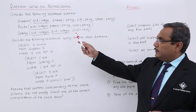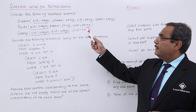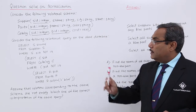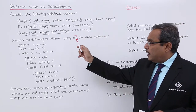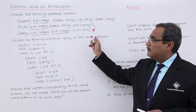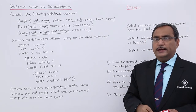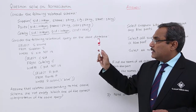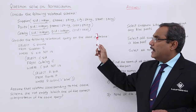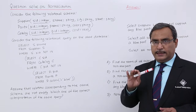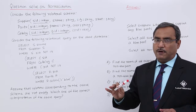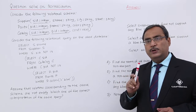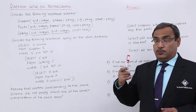Supplier contains the supplier ID, supplier name, city, and street — that means the supplier details. Parts contains parts ID, parts name, and the respective color — that is the parts details. Catalog contains the supplier ID, parts ID, and the cost, meaning it holds transaction information.